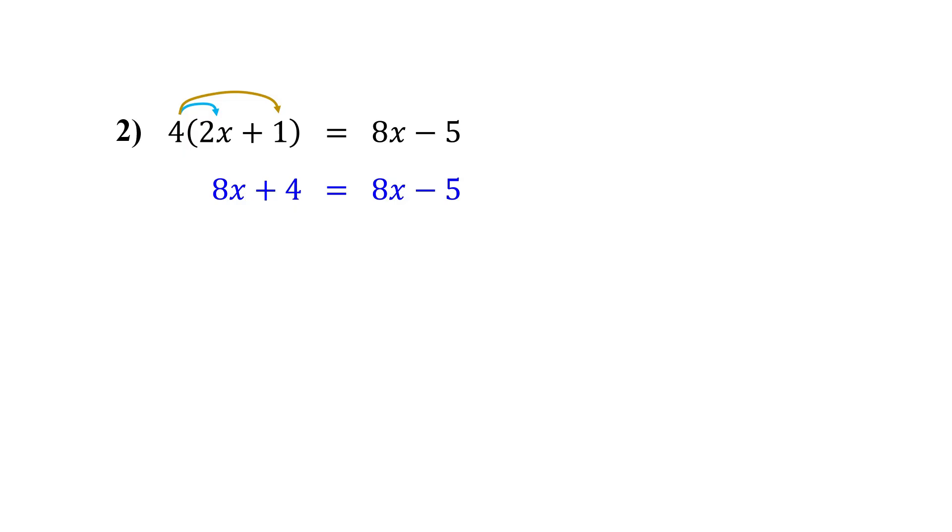Collect the variables on one side. Let's collect them on the left by subtracting 8x from both sides. Notice on each side we have 8x minus 8x, which is 0. They cancel out. So the x's completely vanish.